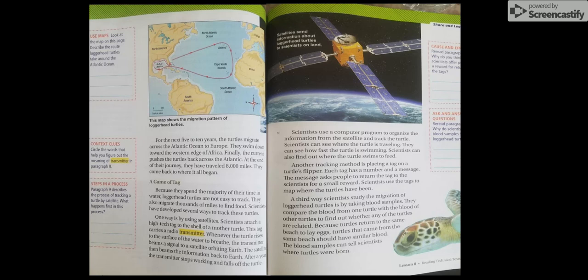A third way scientists study the migration of loggerhead turtles is by taking blood samples. They compare the blood from one turtle with the blood of other turtles to find out whether any of the turtles are related. Because turtles return to the same beach to lay eggs, turtles that came from the same beach should have similar blood. The blood samples can tell scientists where turtles were born.